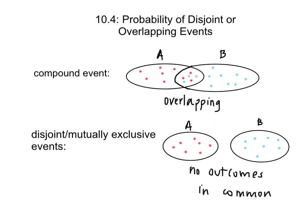Section 4 of Chapter 10 is titled Probability of Disjoint or Overlapping Events. Overlapping events are those that are compound events in which the events of A and the events of B are overlapping. They share events. This is a compound event.